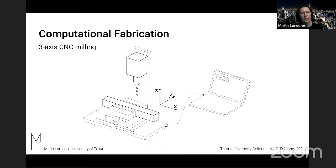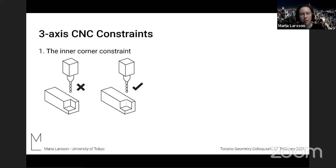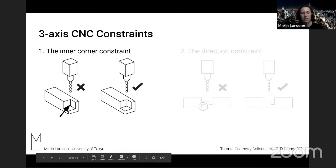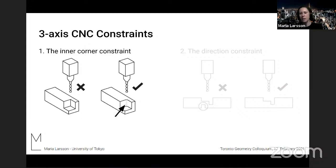And now I will talk a little bit more detail about the fabrication. One important restriction is that we focus on three axis CNC machine because this machine is more affordable and commonly available compared to four or more axis CNC machines. And the specific constraints of this machine is that one is the inner corner constraint and the other one we refer to as the direction constraint. So first of all, this inner corner constraint, it means that you cannot cut sharp inner corners that are aligned with the milling bit. They will have a rounded fillet with the same radius as the milling bit that you're using.